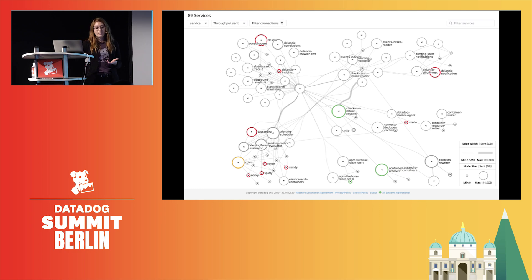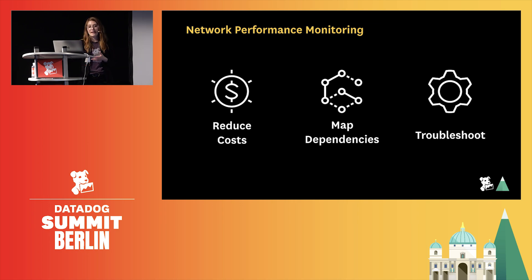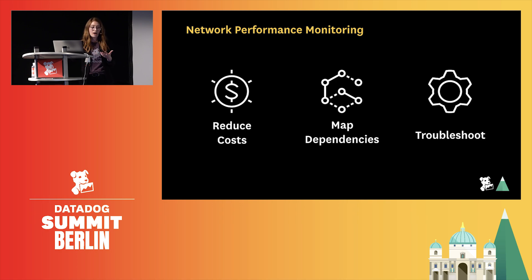We launched network performance monitoring a few months ago, and we've been really pleased to hear about how it has been integrated into your workflows. It has been great for cost reduction, allowing you to identify costly and inefficient long-distance connections; dependency mapping for things like migrating from on-prem to the cloud or into a new Lambda architecture; and troubleshooting, allowing you to go from viewing the symptom to viewing the root cause.